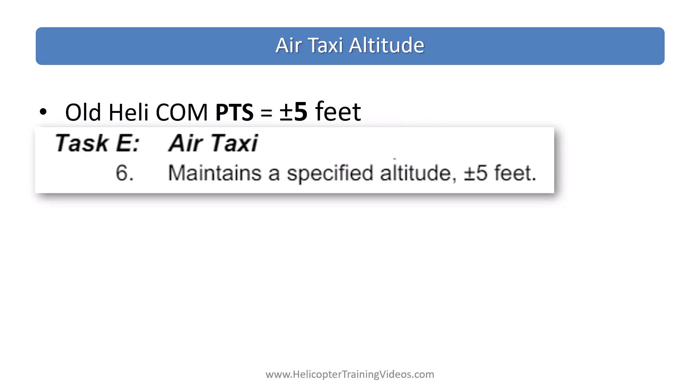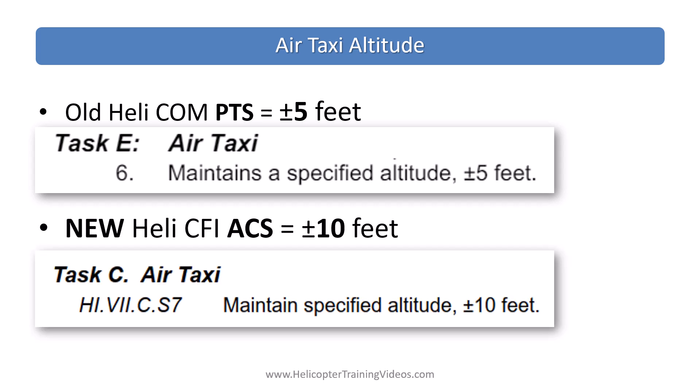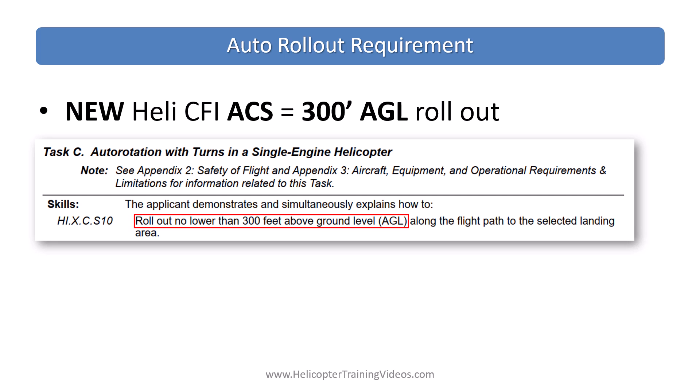For the air taxi altitude change: in the old CFI PTS it was referring to the commercial PTS for the standards, although it didn't have the numbers in the CFI PTS. The old numbers were plus or minus 5 feet. The new commercial ACS changed that to plus or minus 10 feet, and the new CFI ACS now includes the commercial standards in the actual ACS document — so that's where you see the plus or minus 10 now instead of plus or minus 5.